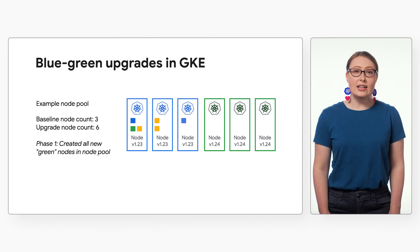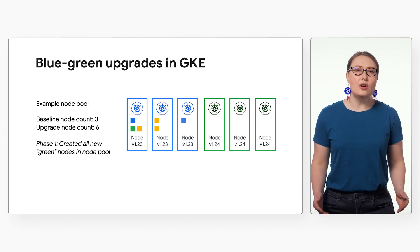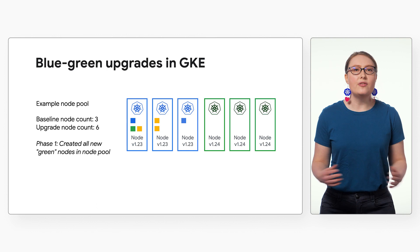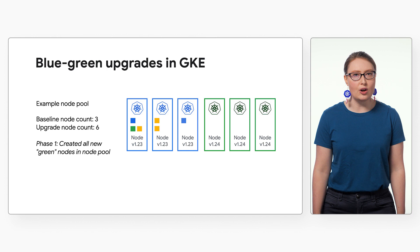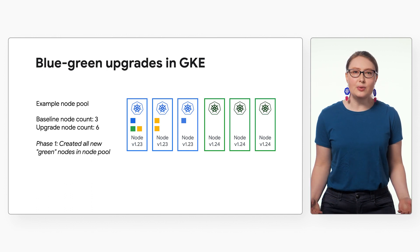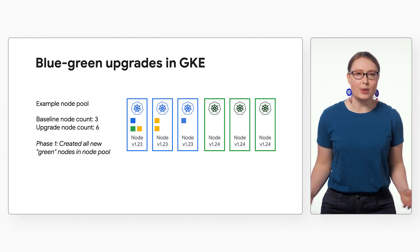A common approach to ensure a smooth transition during an upgrade is to use a blue-green strategy. GKE offers native blue-green node pool upgrade functionality. A blue-green node pool upgrade will spin up a full set of new nodes so you can test workloads on the new version before completing a node pool upgrade. Using a blue-green strategy for upgrades can be particularly helpful in stateful use cases where continuity and stability are especially important. Be sure to check out our video on GKE node pool upgrades to learn more about the strategies and tools to help you upgrade your clusters safely.